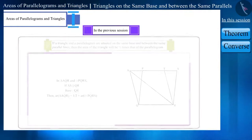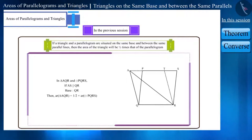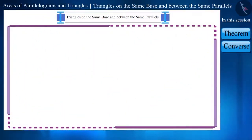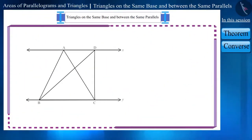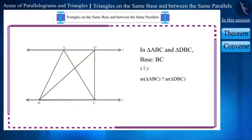Friends, we have already learned about triangles and parallelograms situated on the same base and between the same parallel lines. Moving ahead, if we are given a figure in which two triangles are situated on the same base and between the same parallel lines, then what can you tell about their area?